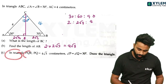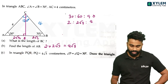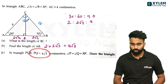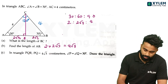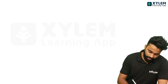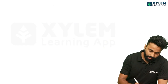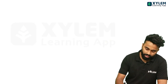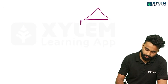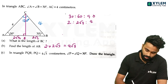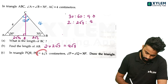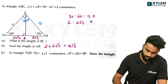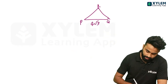This is PQR. PQ is 4√3. We can say that there is a triangle — it is a rough figure. If you have triangle PQR, then PQR is 4. Then PQR angle is 30.